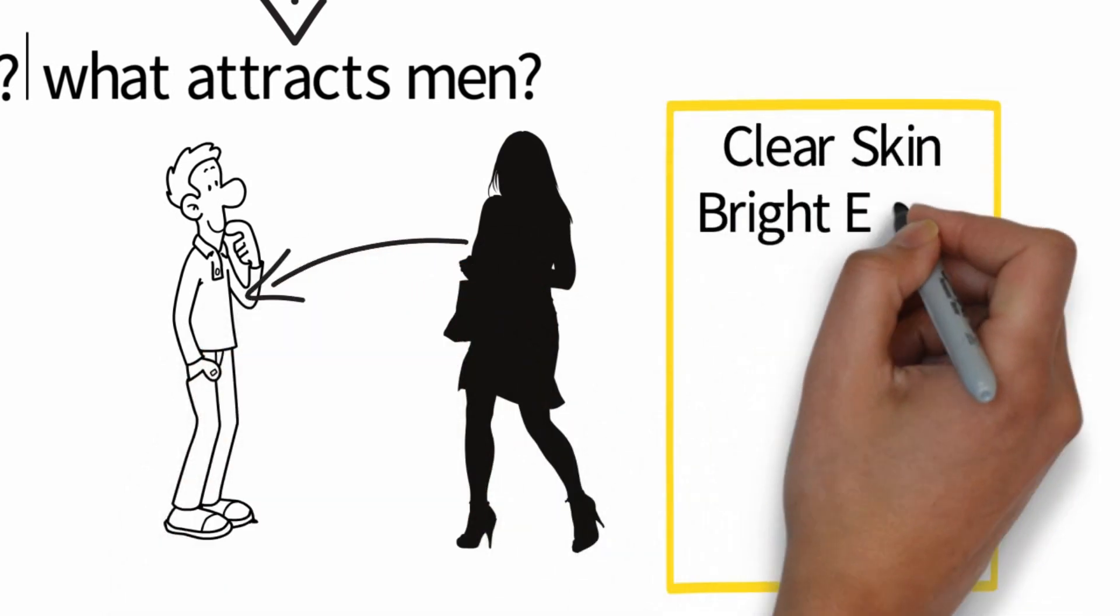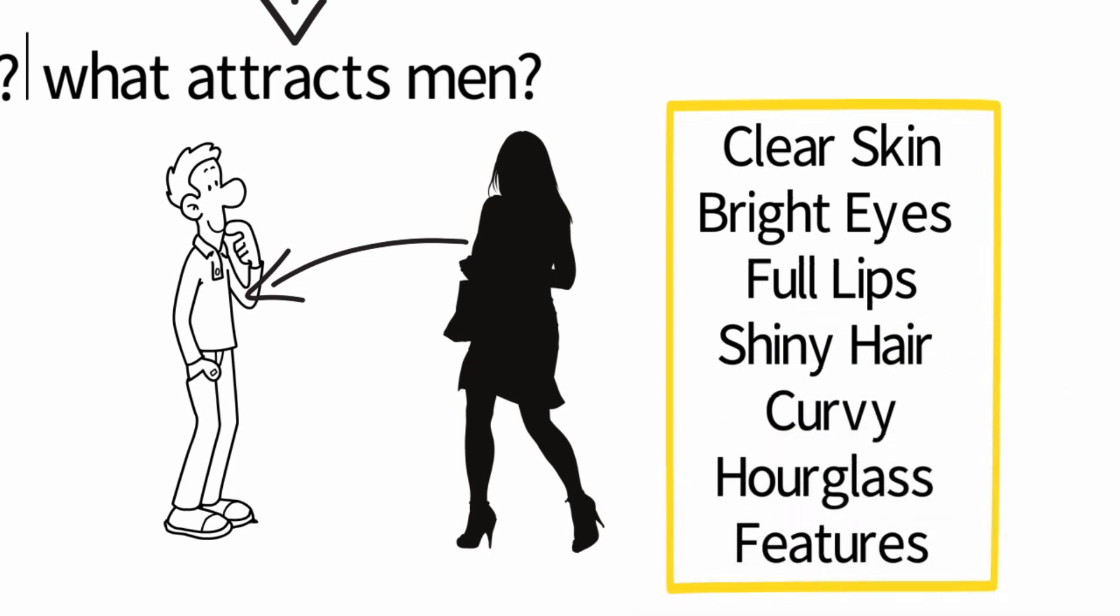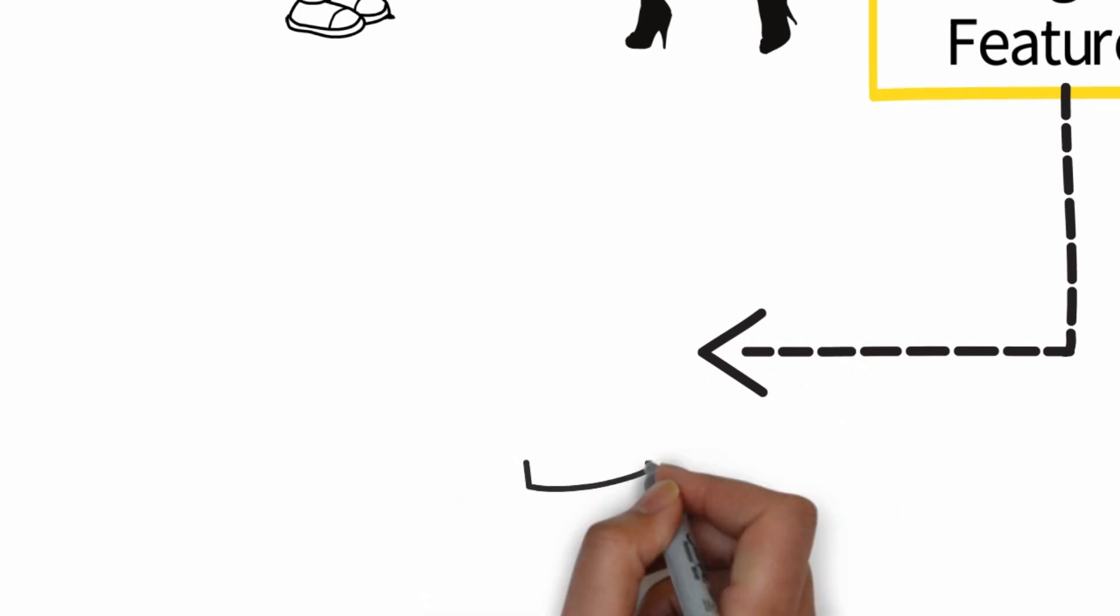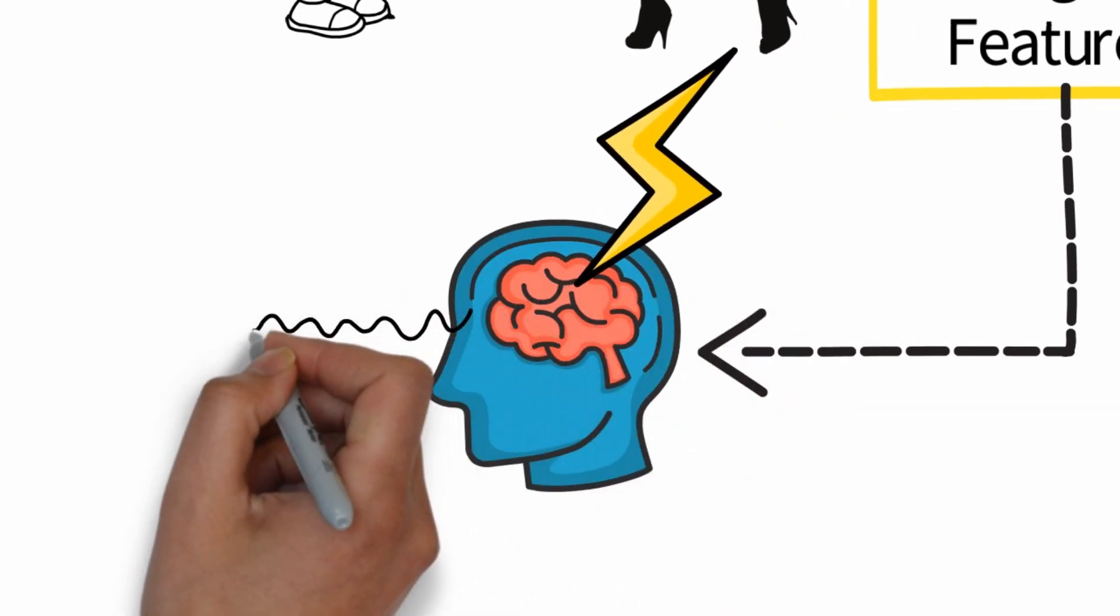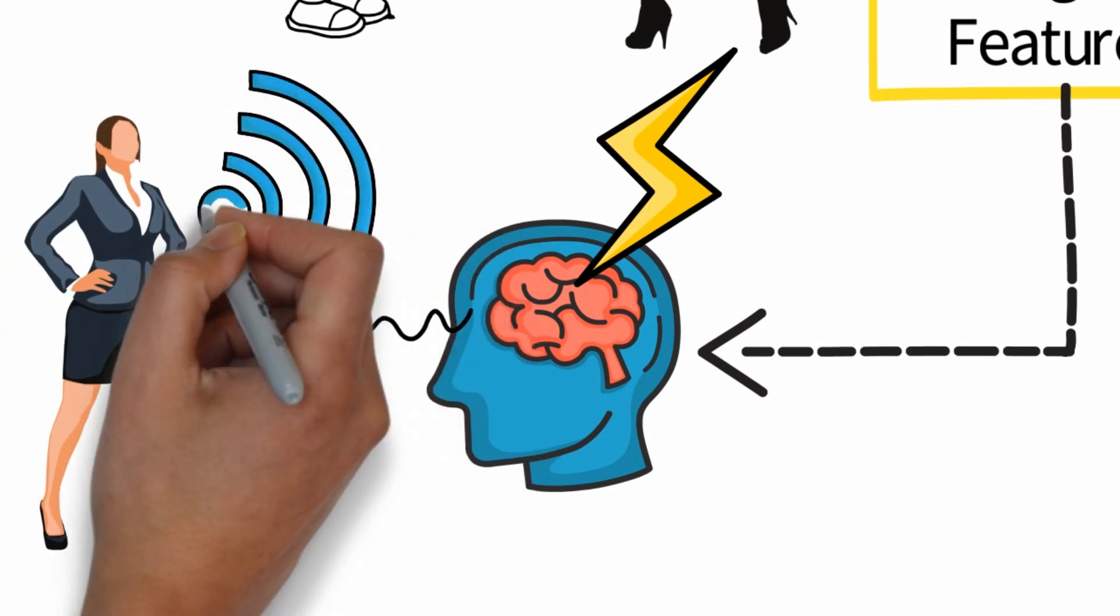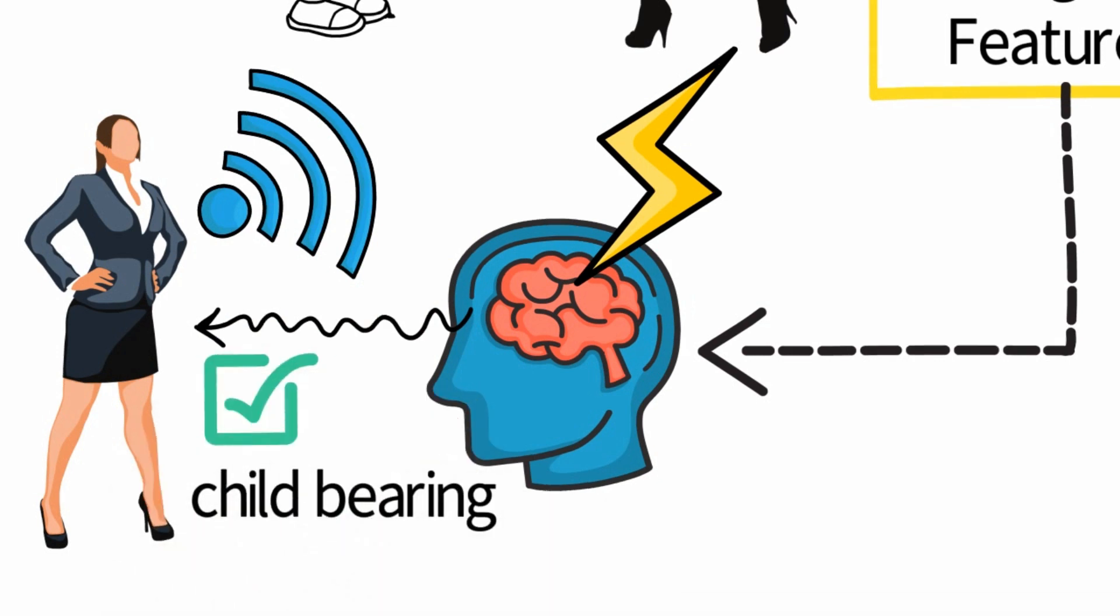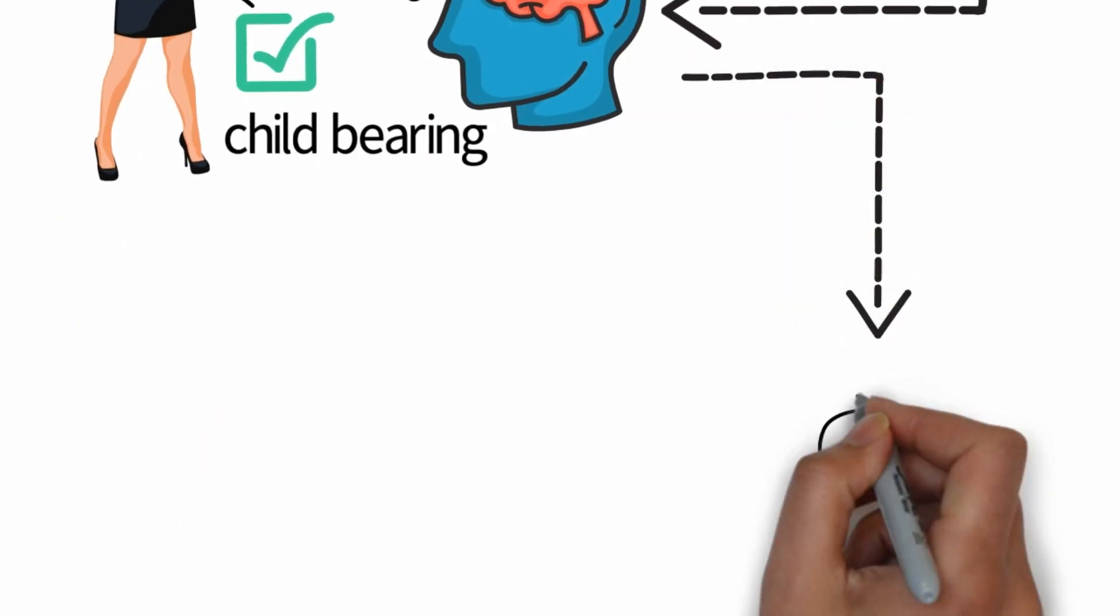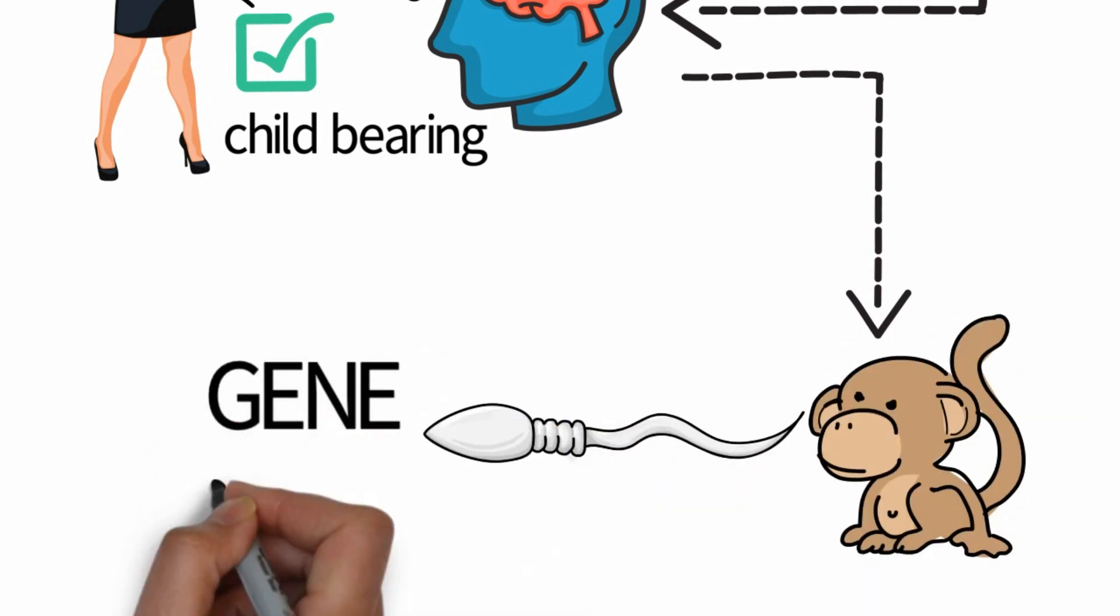Clear skin, bright eyes, full lips, shiny hair, and curvy hourglass features. Men are hardwired to judge if a woman is attractive in a split second. We are designed to be attracted to women's physicality, because a naturally attractive woman is a biological signal that she is fit for childbearing. It's the way our ancestors detected if a woman is physically fit to spread their gene pool.